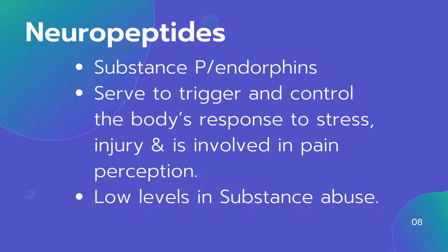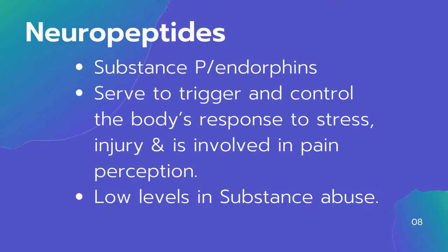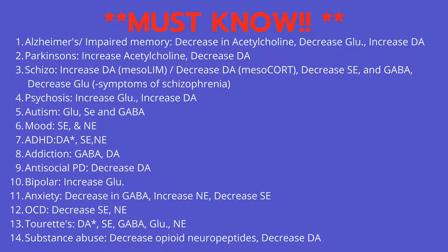The seventh and final neurotransmitter is neuropeptides, known for substance P and endorphins. They trigger and control the body's response to stress and injury and are involved in pain perception. Low levels can be seen in patients with substance abuse disorder.